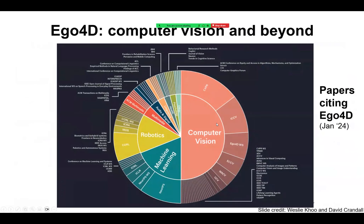We're excited to see that the Ego4D resource, coming out of the computer vision community, is nonetheless facilitating work in other related domains — particularly robotics, but also machine learning, linguistics, cognitive science, audio, and multimedia.